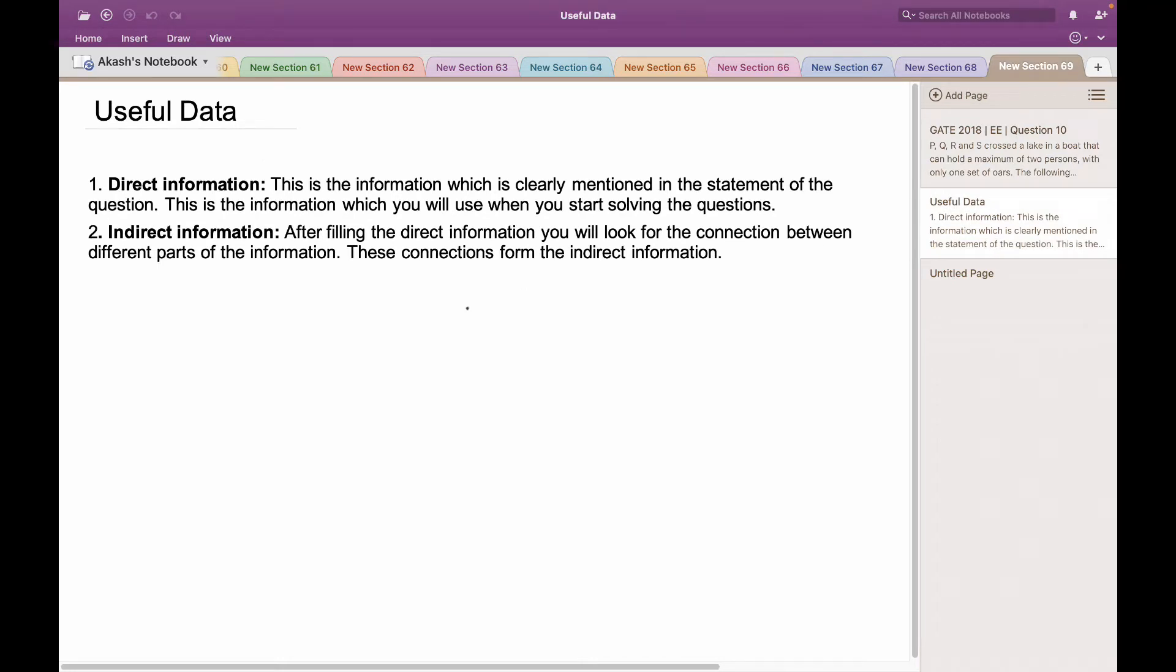In such problems, we always need to figure out the direct information and the indirect information. The direct information is the one which is clearly mentioned in the statement of the question. This is the information which we will be using to start solving the questions. Indirect information is the one for which we will look for the connection between the different parts of the information. These connections form the indirect information. On the basis of these, let's try to solve the problem.